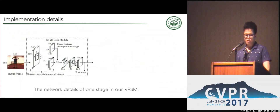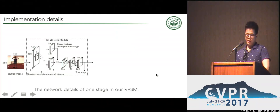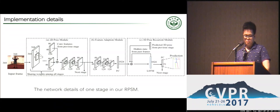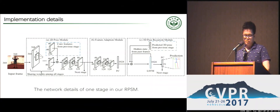I will now introduce the network details of one stage in our RPSM. The input to the network is an image of shape 368×368. The 2D Pose module consists of 15 convolutional layers and 4 max pooling layers. The feature-adaption module contains two convolutional layers and one fully-connected layer. The 3D Pose recurrent module is composed of one LSTM layer and one fully-connected layer to predict the 3D pose. The convolutional features from previous stages are also connected as input to the 2D Pose module, and the 3D pose predicted from previous stages is also connected as input to the 3D Pose recurrent module.